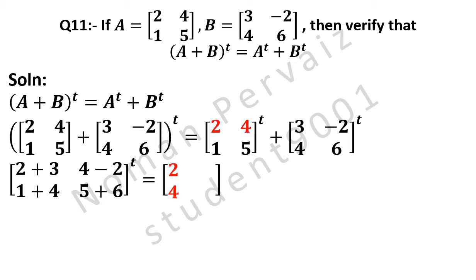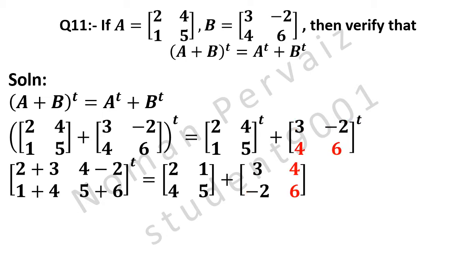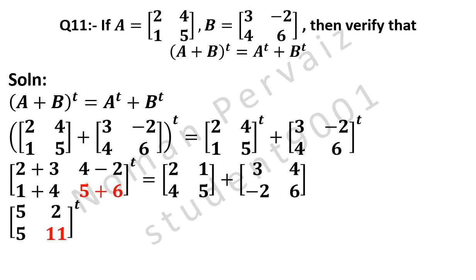Transpose means changing rows into columns or columns into rows. In this case we will change rows into columns. The first row is changed to the first column, so 2 and 4 are written into the first column. The second row is changed to the second column, so 1 and 5 are written into the second column. Plus is written; first row of the second matrix is changed to first column, so 3 and minus 2 are written into the first column; second row is changed to second column, so 4 and 6 are written into the second column. So: 2 plus 3 is 5, 4 minus 2 is 2, 1 plus 4 is 5, and 5 plus 6 is 11.